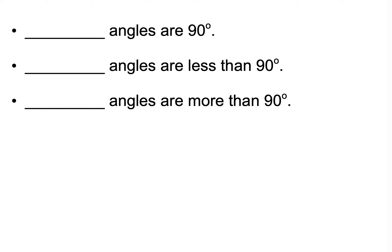Today we are reviewing for the Chapter 7 quiz. We're going to be reviewing different types of angles and different properties and names of triangles. So we're going to start with some vocabulary describing angles.